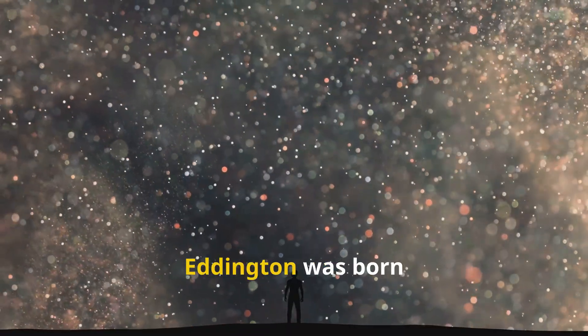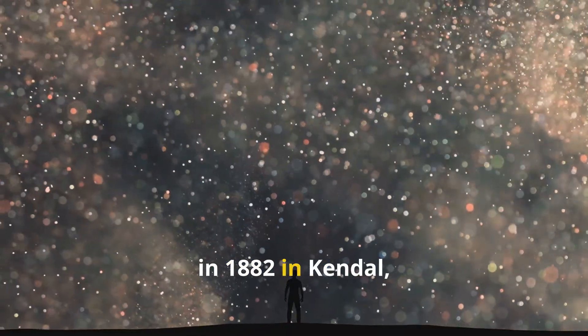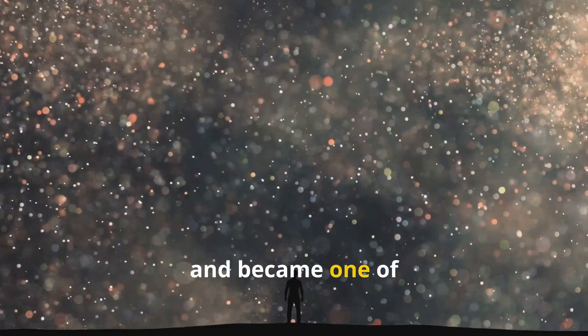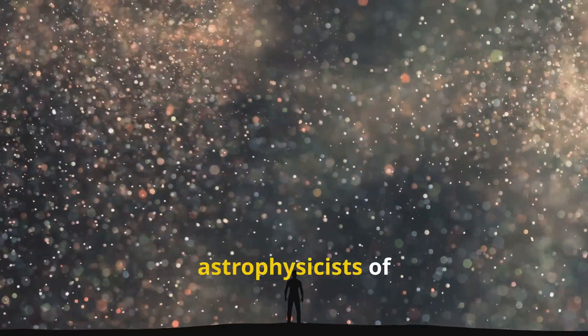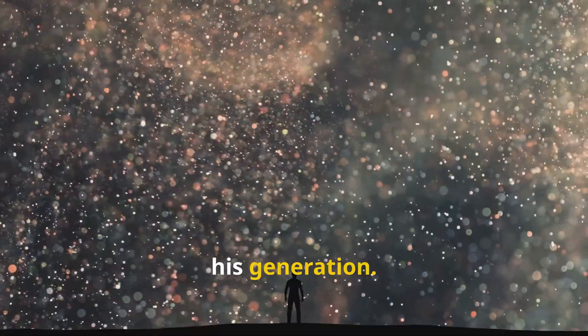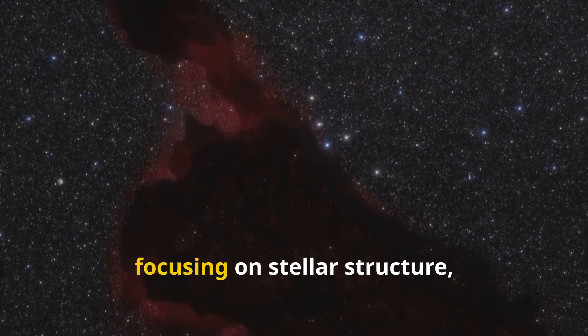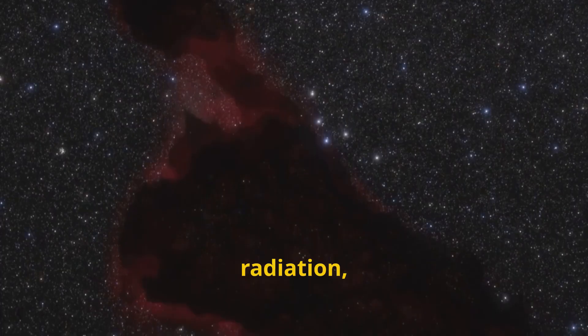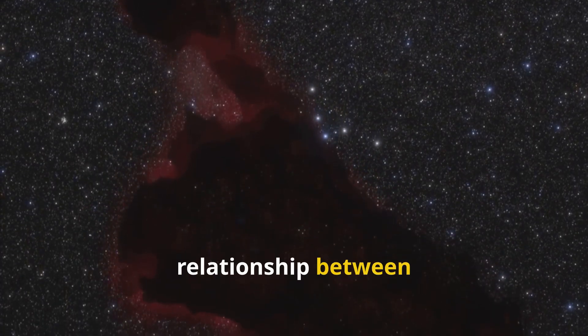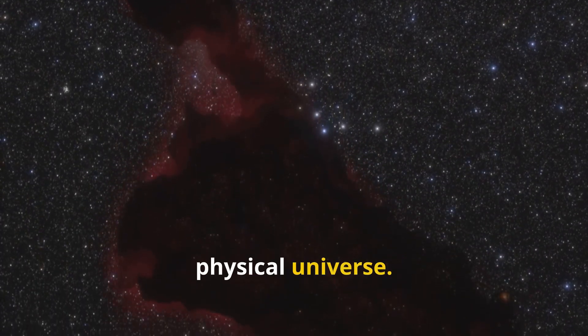Arthur Stanley Eddington was born in 1882 in Kendall, England, and became one of the most brilliant astrophysicists of his generation. Educated at Cambridge, Eddington was drawn to the mysteries of the cosmos, focusing on stellar structure, radiation, and the deep relationship between mathematics and the physical universe.